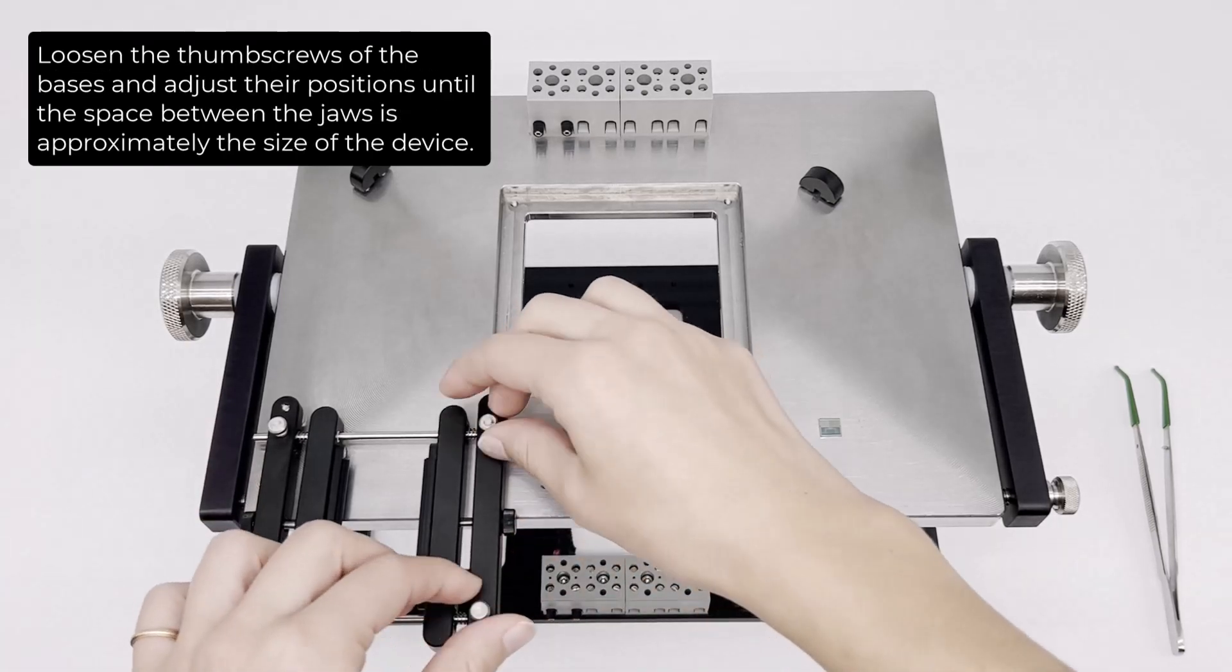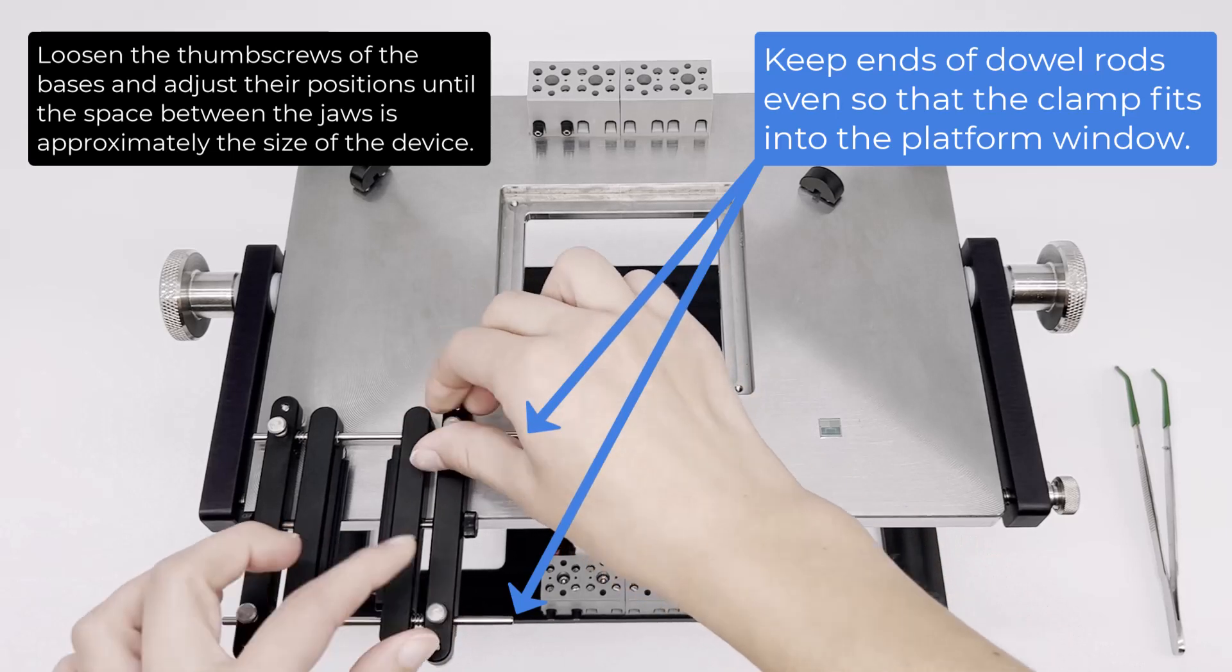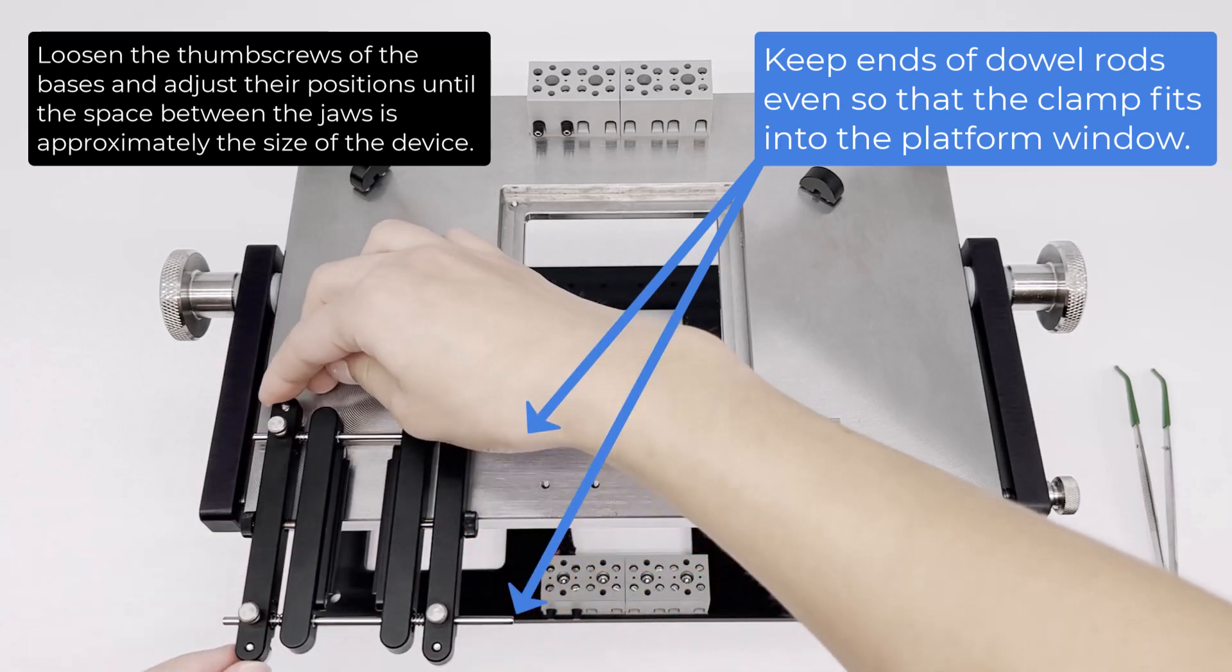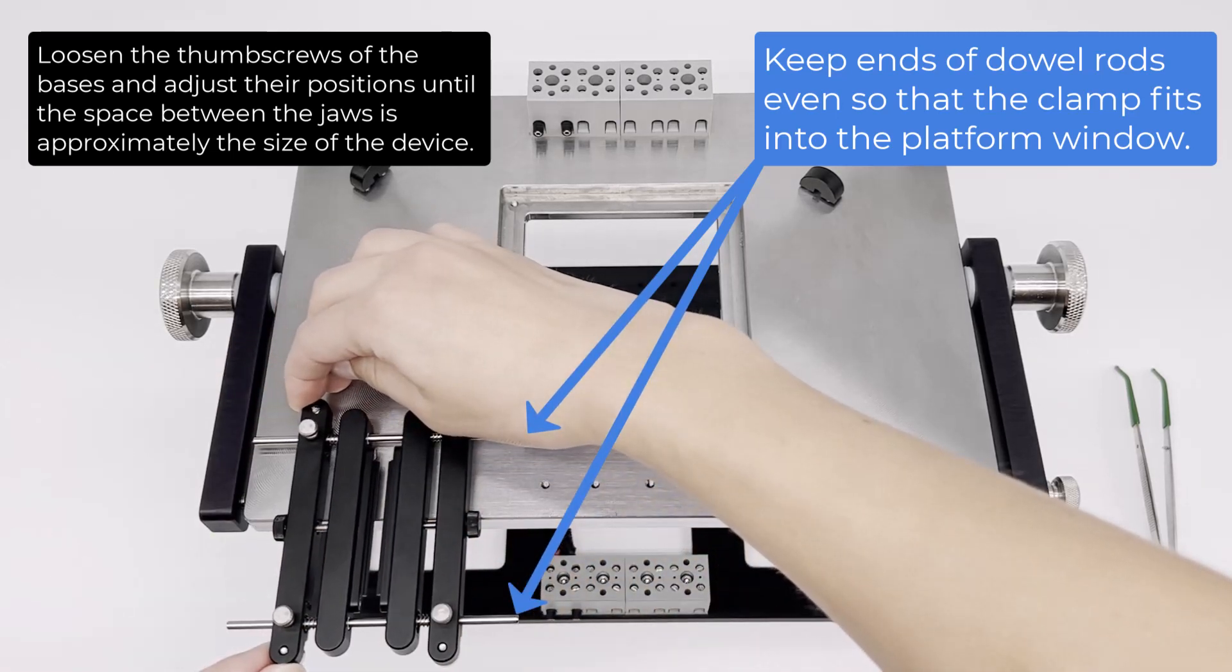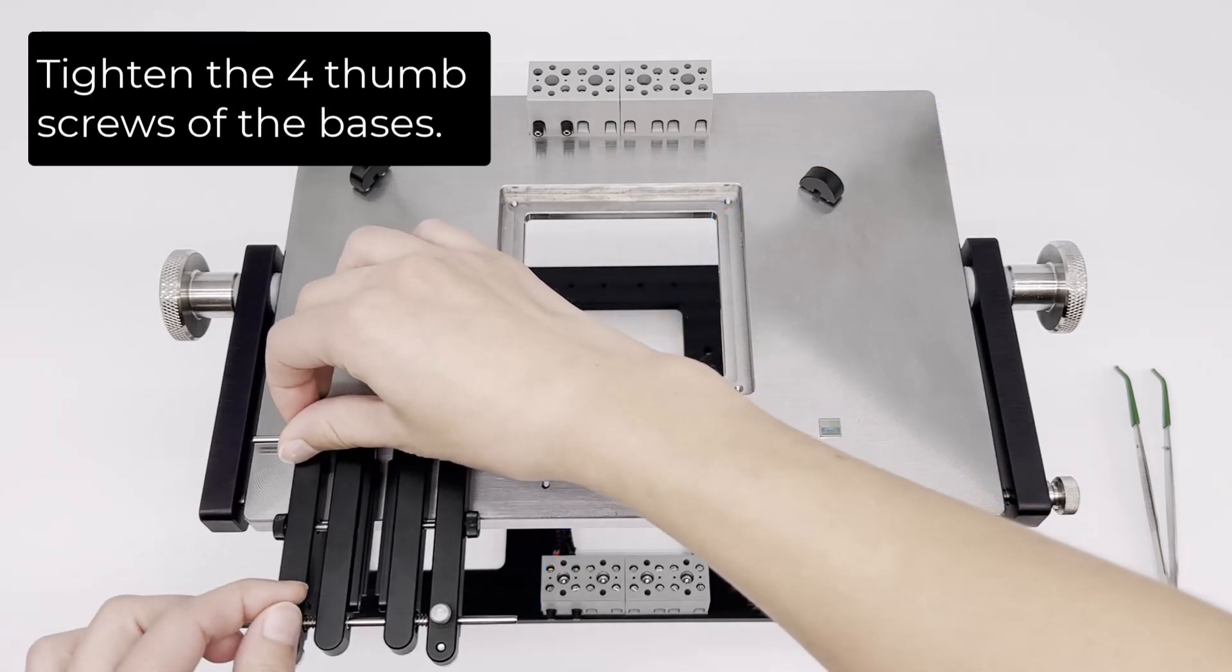Loosen the thumb screws of the bases and adjust their positions until the space between the jaws is approximately the size of the device. Tighten the four thumb screws of the bases.